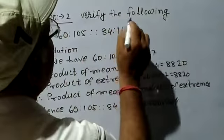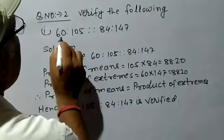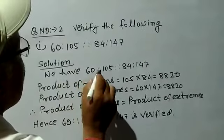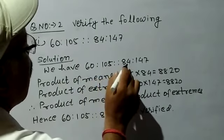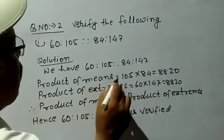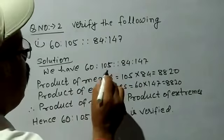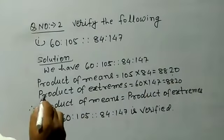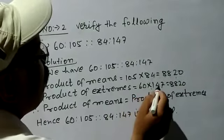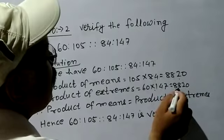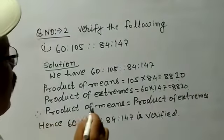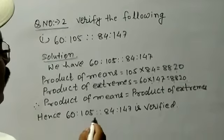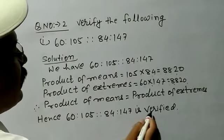Question number 2: Verify the following. Given: 60:105 :: 84:147. Solution — product of means equals 105 into 84 equals 8,820. Product of extremes: 60 into 147 equals 8,820. Therefore, product of means equals product of extremes. Hence 60:105 :: 84:147 is verified.